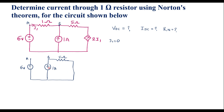In this loop, the 1 amp current flows, so the voltage across the 5 ohm resistor is 5 × 1 = 5 volts. That is VB = 5 volts. And VA = 6 volts, since the 6 volt source is directly connected to node A.